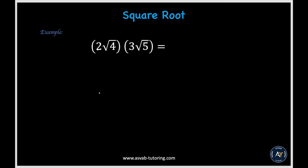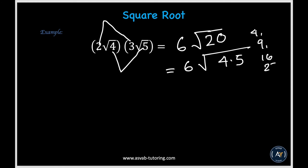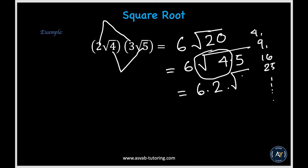Let's learn how to multiply square roots with numbers. If you want to multiply numbers with square roots, you multiply the whole number with the whole number and the square root with the square root. So 3 times 2 is 6, and 4 times 5 is 20, giving you 6 square root of 20. To simplify, split 20 into 4 times 5 — since 4 is a perfect square, square root of 4 is 2. So 6 times 2 is 12 square root of 5.